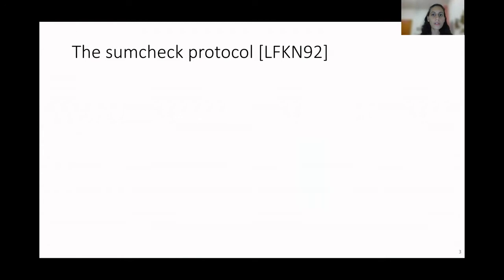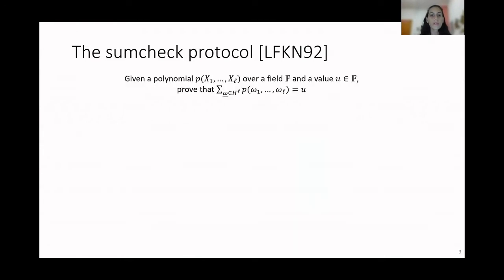A particular succinct protocol is the sum-check protocol, which was introduced in 1992. In this protocol, the common input contains a polynomial P over a field F and a value U over the same field. The statement that the prover is trying to convince the verifier is that the evaluation of this polynomial over a subset H to the L is equal to the common value U.